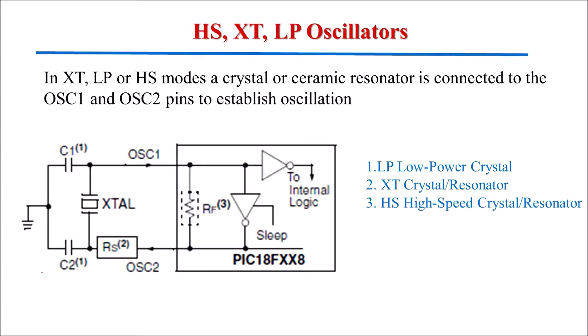The first type of oscillator is crystal oscillator. Three different oscillator configurations are available with external crystal oscillator: XT, LP, or HS with crystal or resonator. This crystal or resonator is connected between the 2 pins of the microcontroller — oscillator 1 pin and oscillator 2 pin. Here the external crystal has to be connected. These 2 capacitors, C1 and C2, should be connected to reduce the noise. This is the series resistor and this is the feedback resistor.